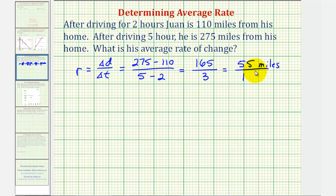And the one represents one hour, giving us our average rate of change. The average rate of change during this time period is 55 miles per hour.